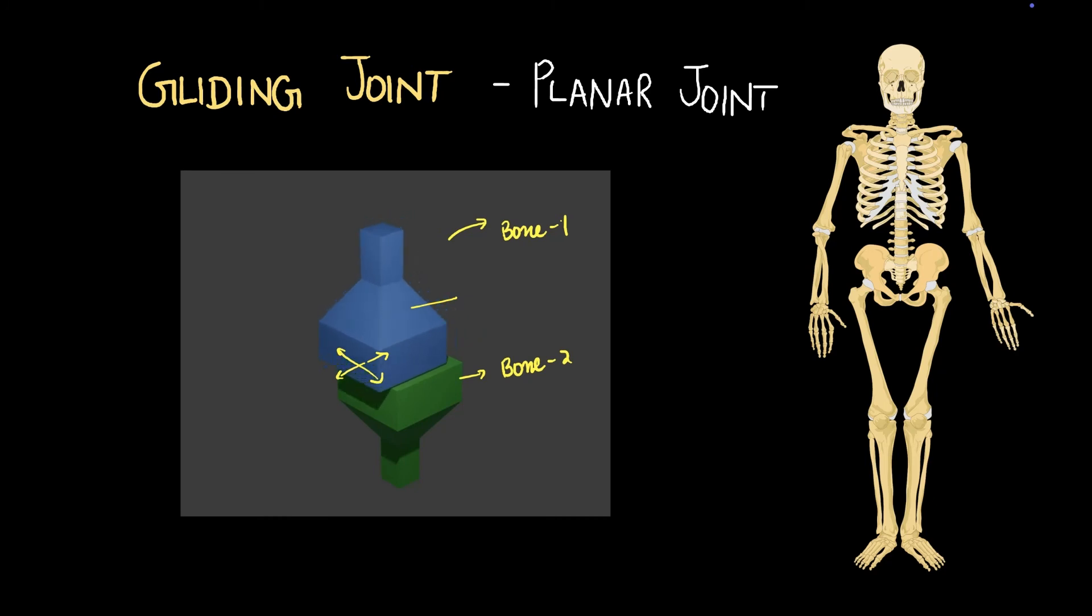But wait a minute, how is it different from the ball and socket joint? Notice that these surfaces are planar. So there's no rotation involved. There's only gliding involved, and that's why it's called a gliding joint.